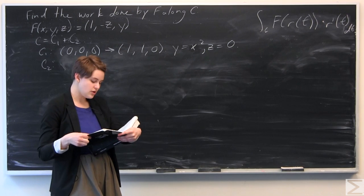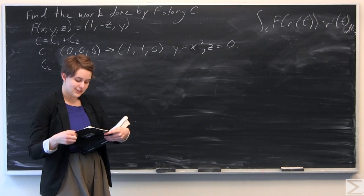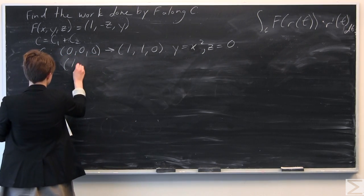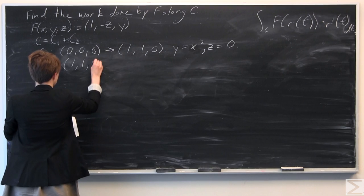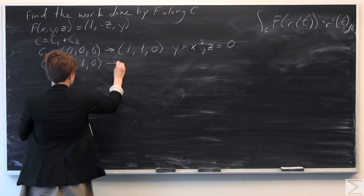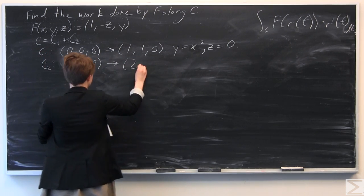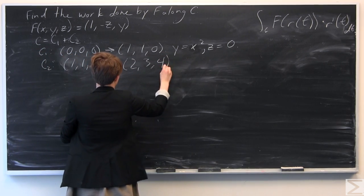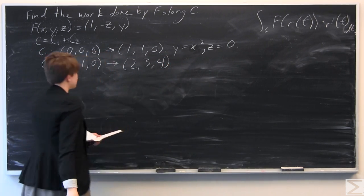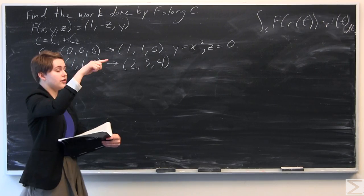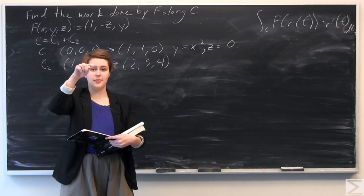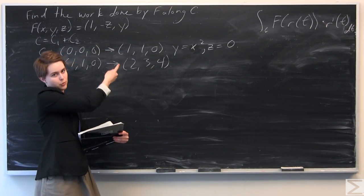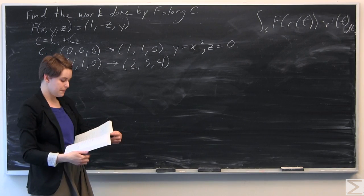C2 is the line segment from (1, 1, 0) to (2, 3, 4). So we have a curve that goes up along the parabola and then out along a line segment.